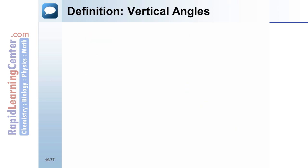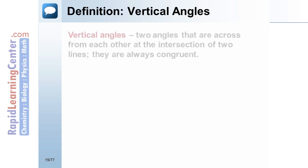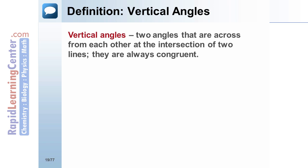Definition: Vertical Angles. Vertical angles are two angles that are across from each other at the intersection of two lines. Vertical angles are always congruent. In the figure, angles 1 and 3 are vertical angles, and angles 2 and 4 are also vertical angles.